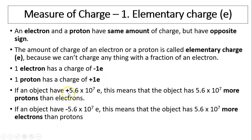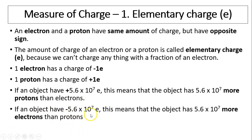If an object has a charge of positive 5.6×10⁷ elementary charges, it means the object has 5.6×10⁷ more protons than electrons — it has lost that many electrons. On the other hand, if the object has a charge of negative 5.6×10⁷ elementary charges, it means the object has 5.6×10⁷ more electrons than protons.